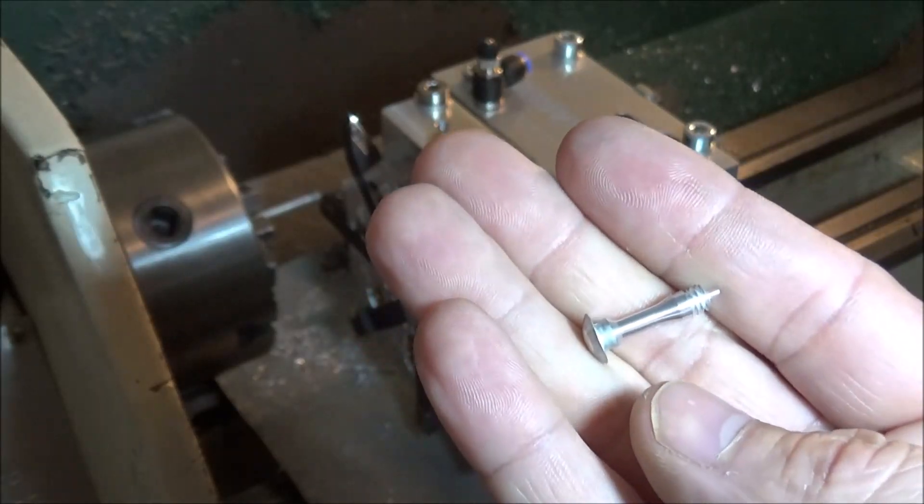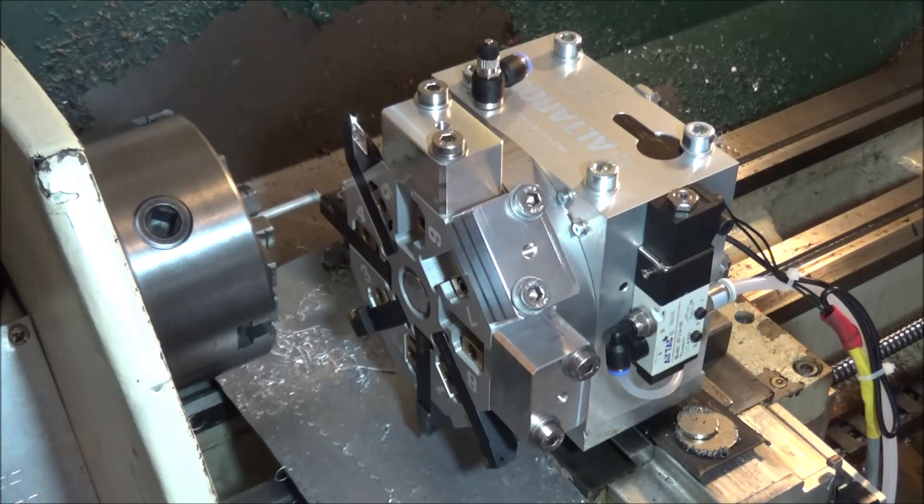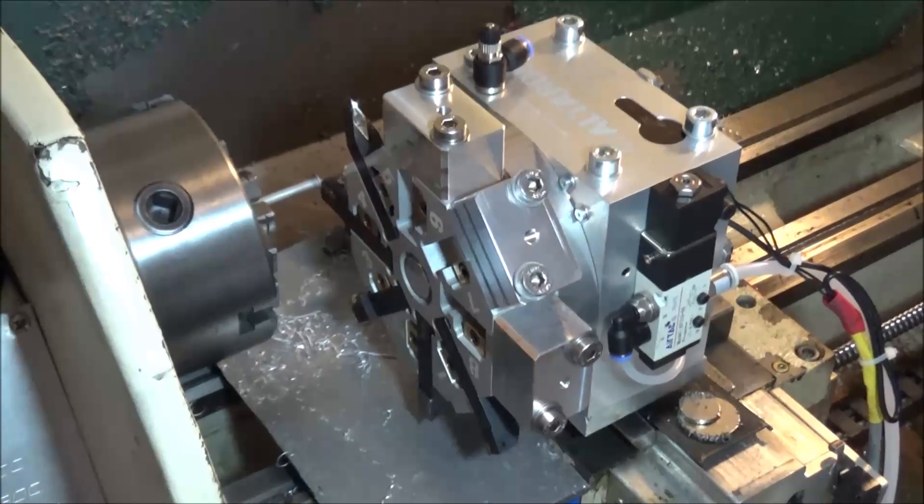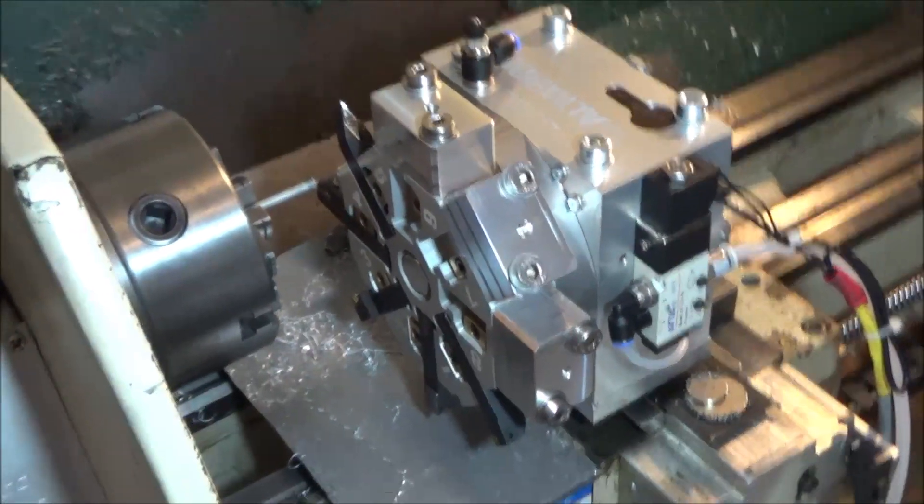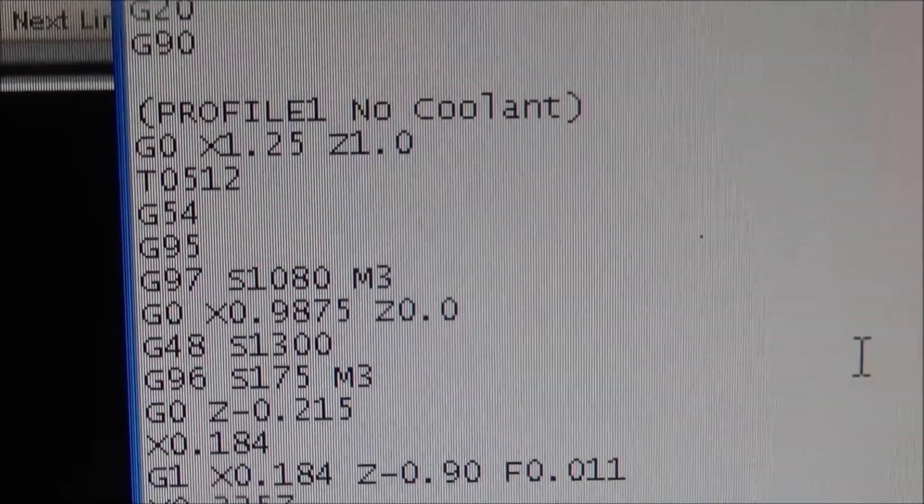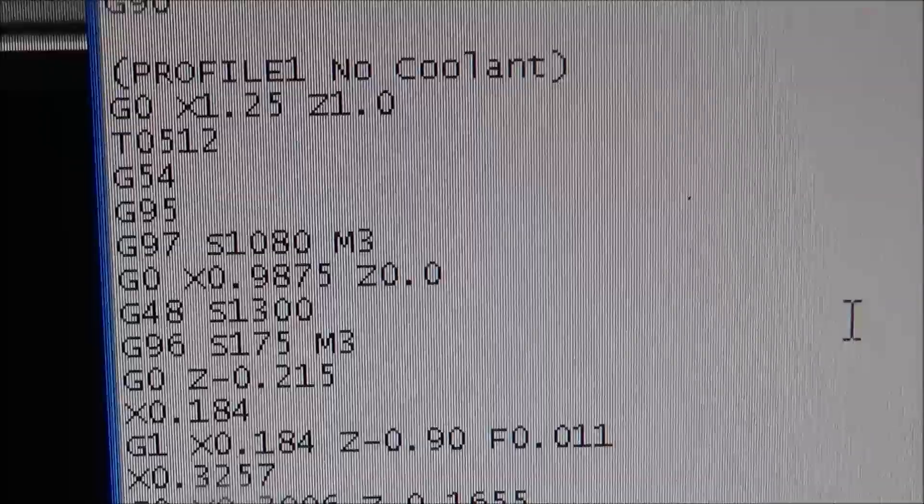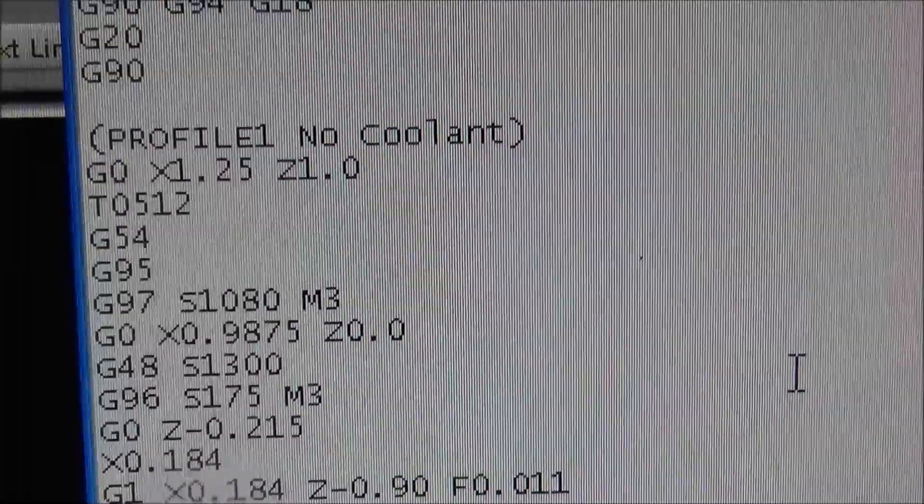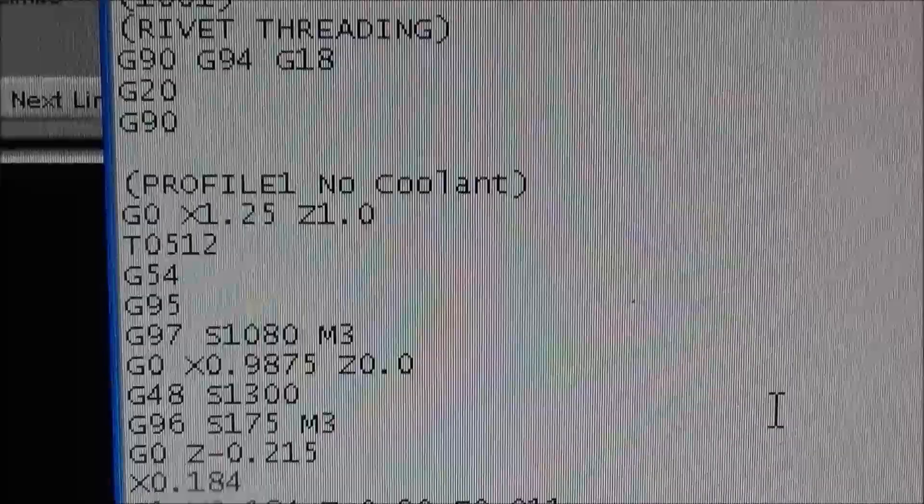Now with Mach 3 Turn, tool calls are called a little bit different than with Mach 3 Mill. We're not going to use M6 in the G-code. We're just going to use T05, which is position 5, and in my case I'm using 12, which is the offsets for tool 12.